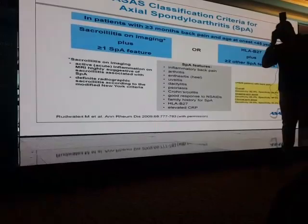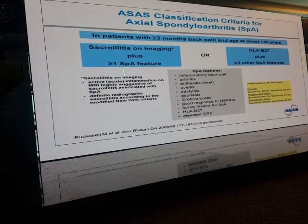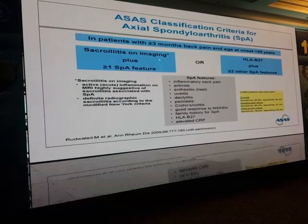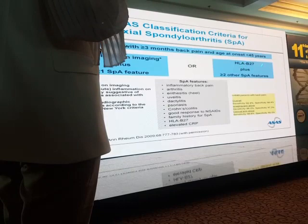The ASAS classification criteria for axial spondyloarthritis: basically, we have a patient with three months of back pain with age of onset less than 45 years. These patients may be diagnosed by the radiographic arm of the disease in the presence of sacroiliitis plus one or more SpA features, or by the clinical arm only — being HLA-B27 positive plus two or more clinical SpA features.